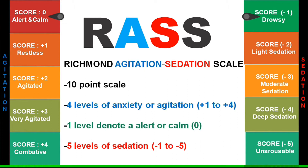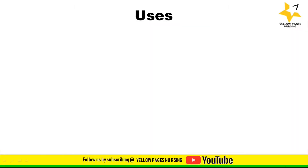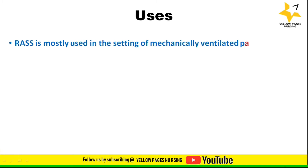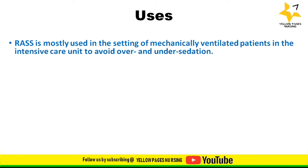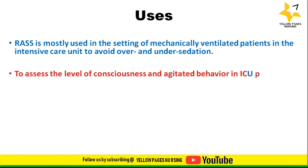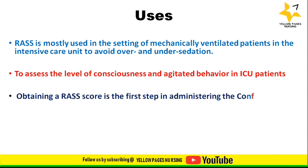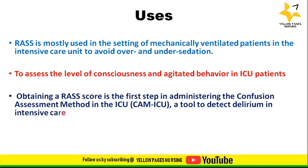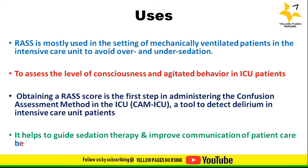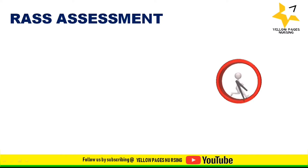RASS is mostly used in the setting of mechanically ventilated patients in the intensive care unit to avoid over and under sedation. It's also used to assess the level of consciousness and agitated behavior in ICU patients. Obtaining a RASS score is the first step in administering the Confusion Assessment Method in the ICU, which is a tool to detect delirium in ICU patients. RASS scale also helps to guide sedation therapy and improve communication of patient care between healthcare providers.